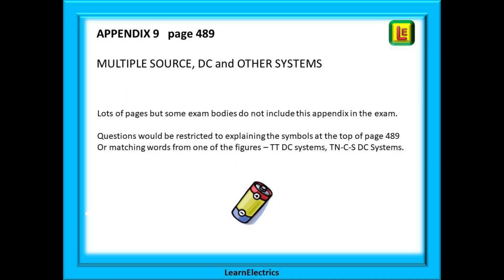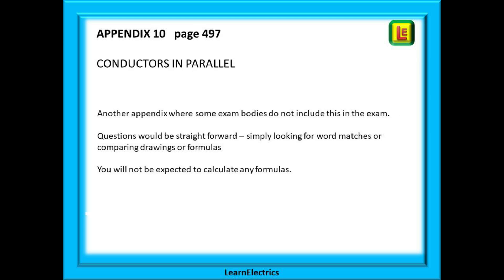Appendix 9 is another section where questions are rare. It has lots of pages — have a glance over them; they are all related to DC systems: TTDC, TNCSDC and so on. Appendix 10 on conductors in parallel is another section that many exam bodies rarely ask questions on. If a question appears in the exam you are literally looking for exact matches of wording or drawings. There are also many formulas shown, but relax — you will not be expected to perform any calculations from this section.